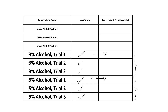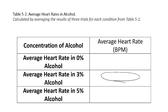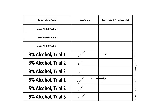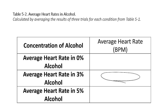Now you need to make an average of the heart rate in 3% alcohol and record your results here. Do the same thing for 5% alcohol — make an average of the heart rate in 5% and record your results here.